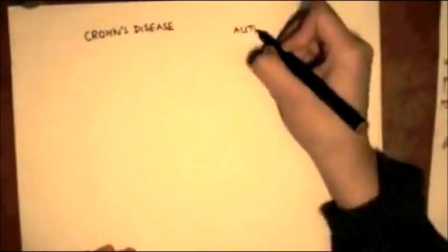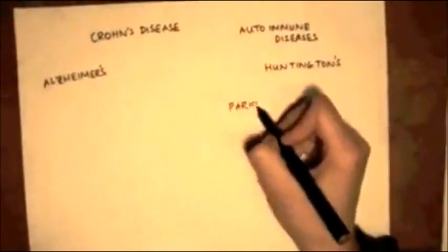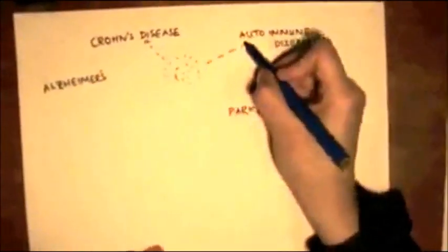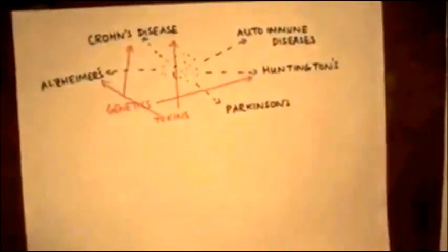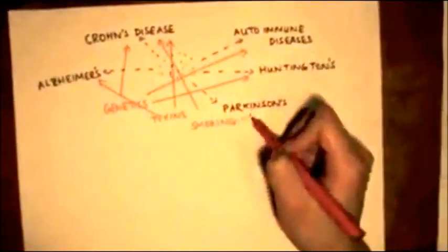Other studies have linked Crohn's disease, which can lead to cancer, autoimmune diseases, Alzheimer's, Huntington's and Parkinson's to nanoparticle exposure. However, the links are tenuous, as nanoparticles are one of many factors that can trigger these conditions, rather than being a primary cause.